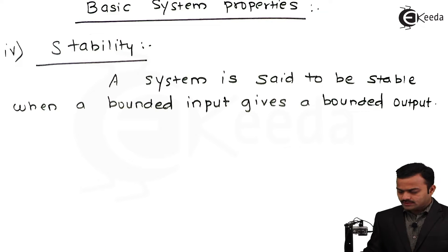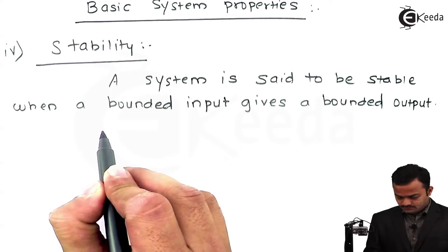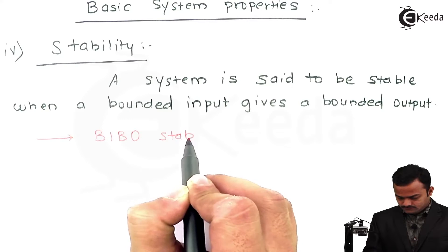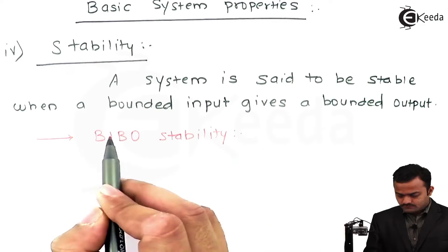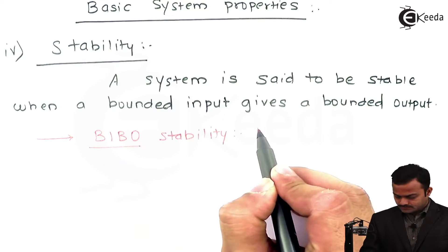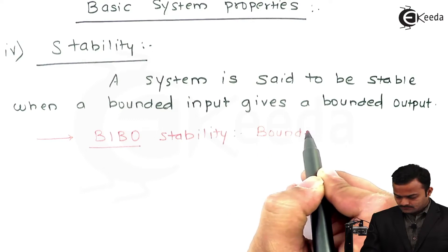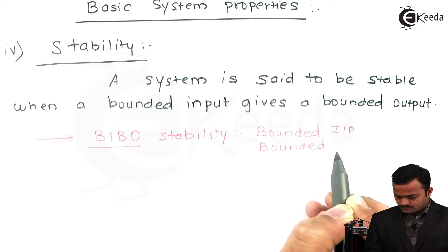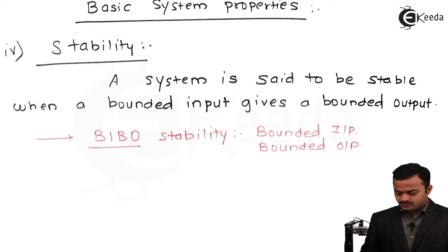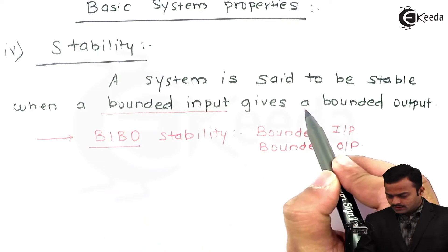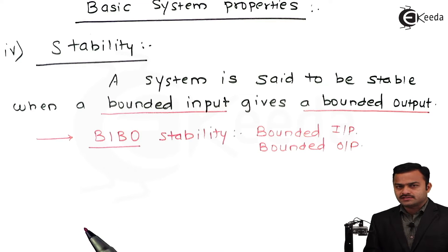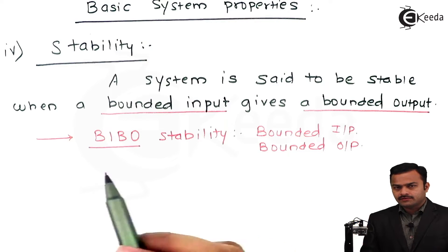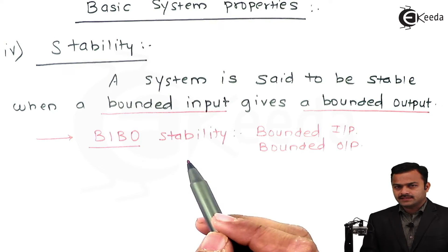We can call this the BIBO stability criteria of a system. BIBO stands for Bounded Input, Bounded Output. It is very important to have a bounded input, and obviously it will give a bounded output in case of a stable system. As we have seen, in a stable system the magnitude should not increase if I am giving a finite sequence at the input side.